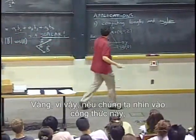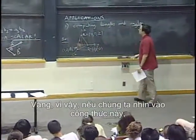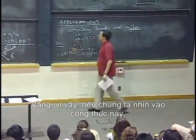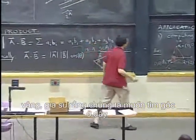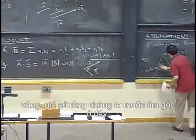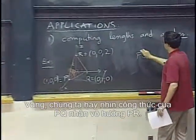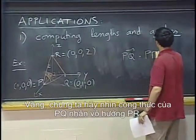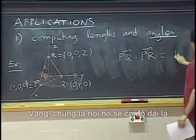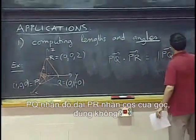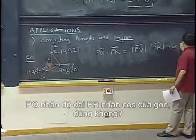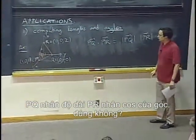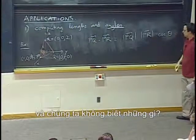Well, so if we look at this formula, we see, so let's say that we want to find the angle here. Well, let's look at the formula for PQ dot PR. Well, we said it should be length PQ times length PR times the cosine of the angle. OK, now what do we know and what do we not know?